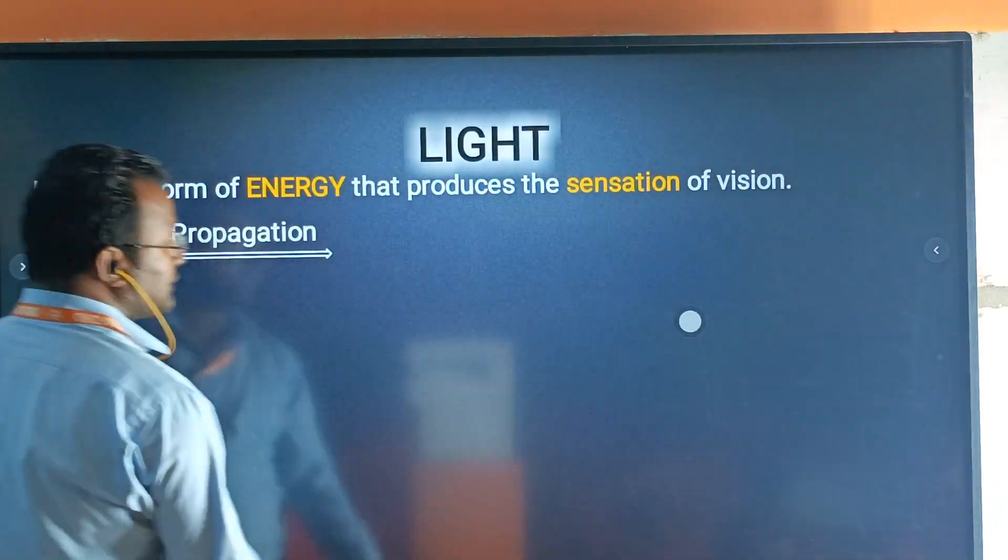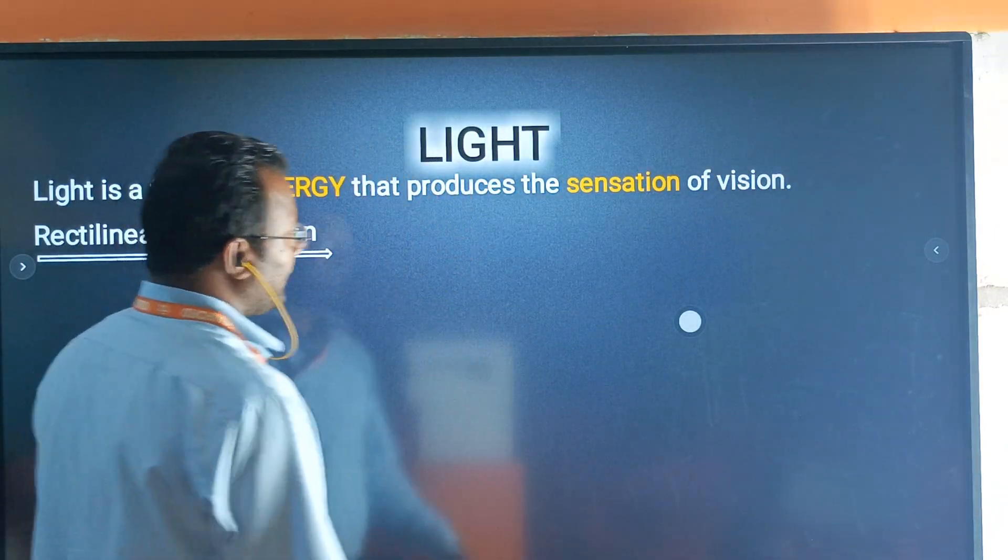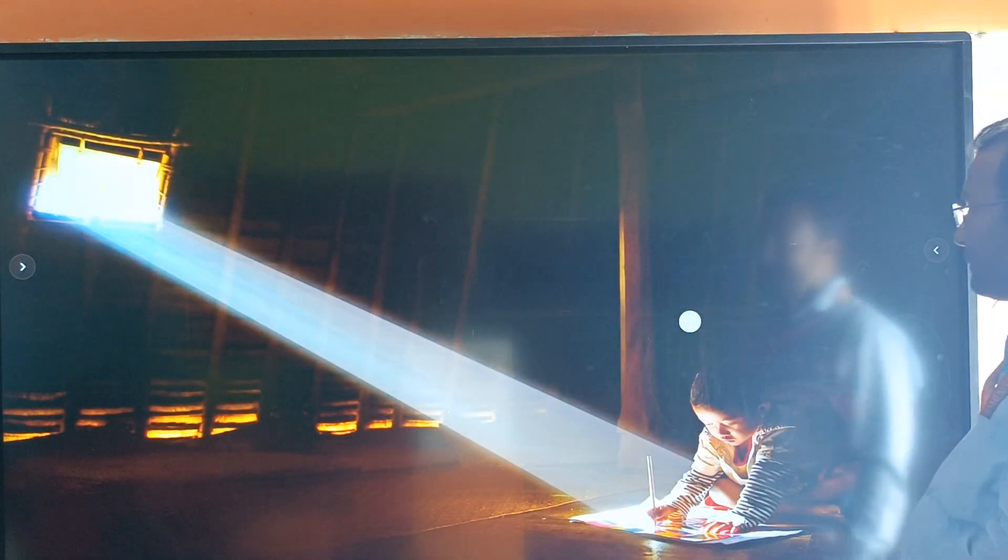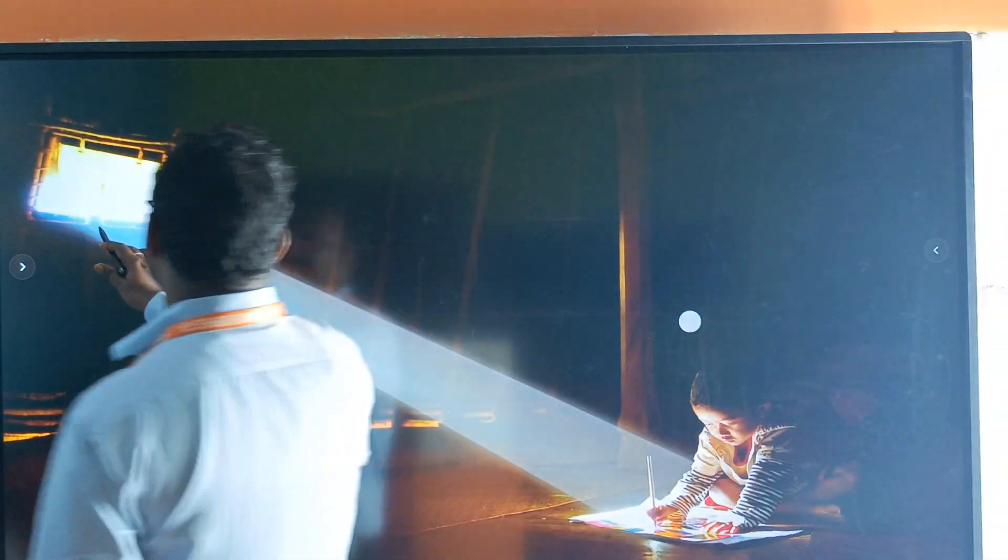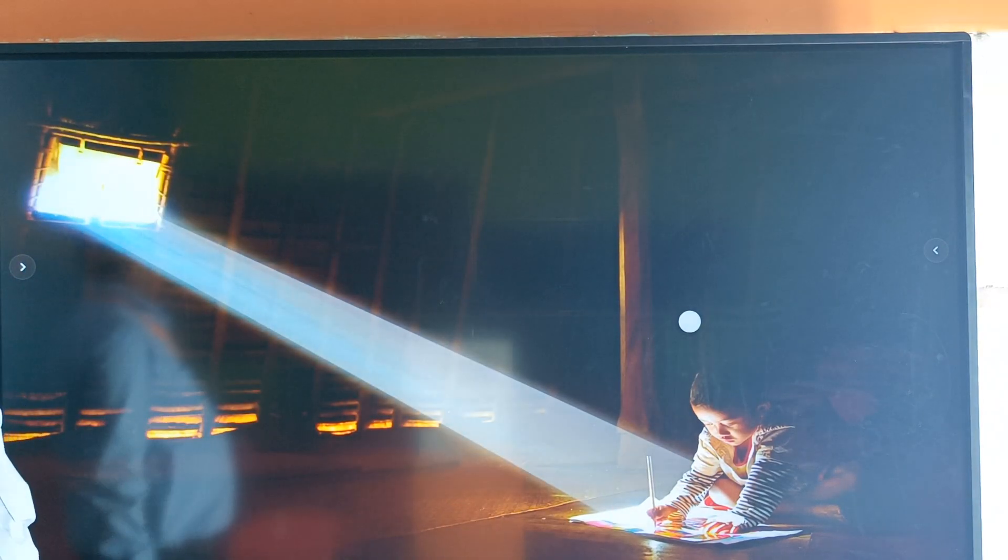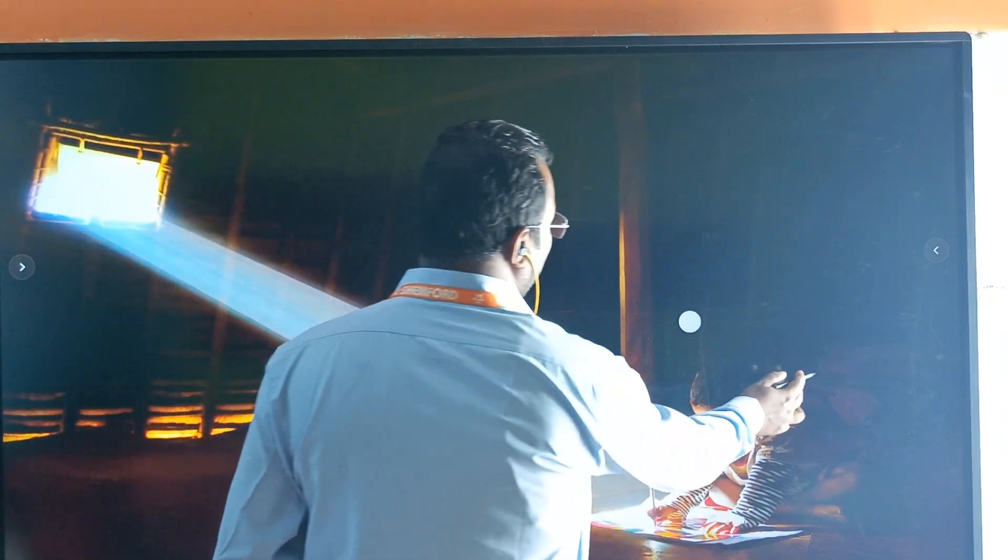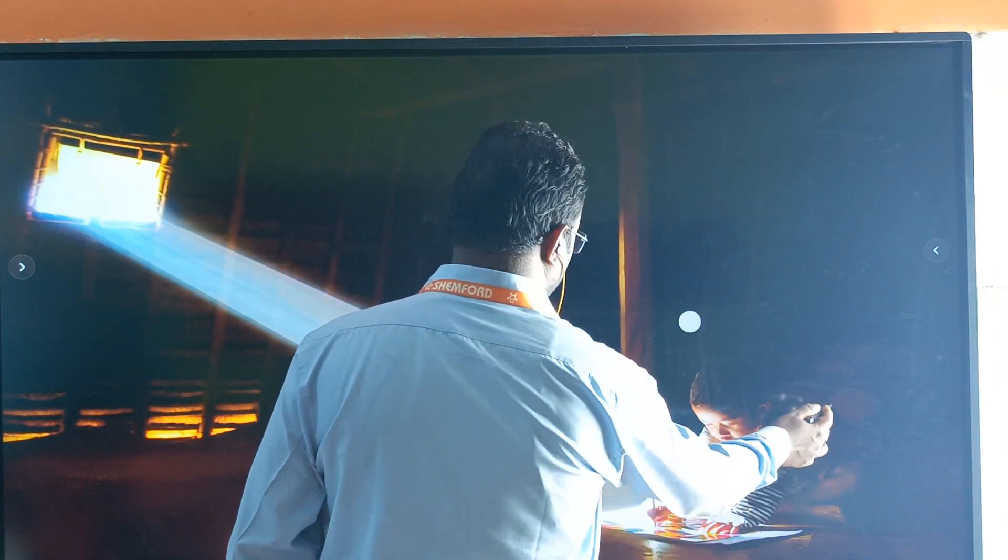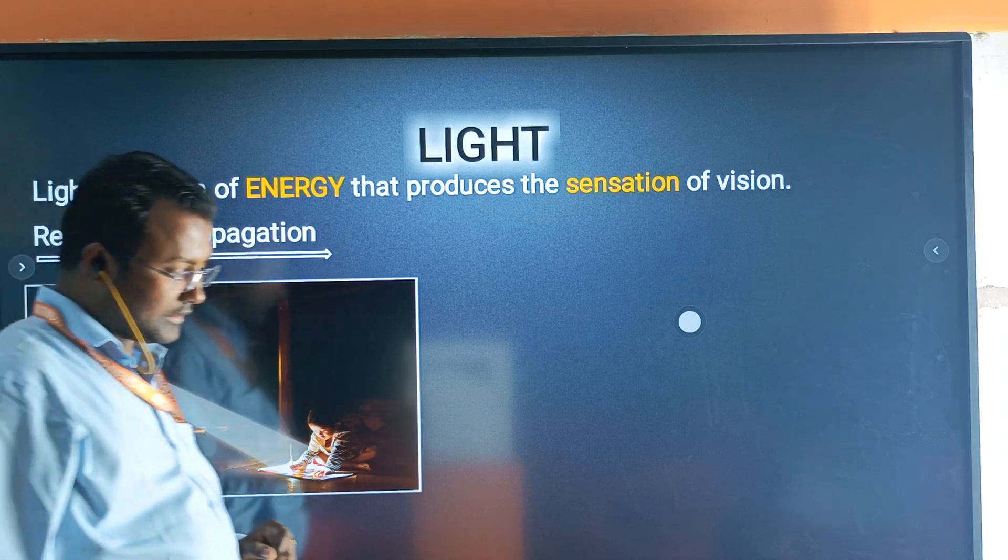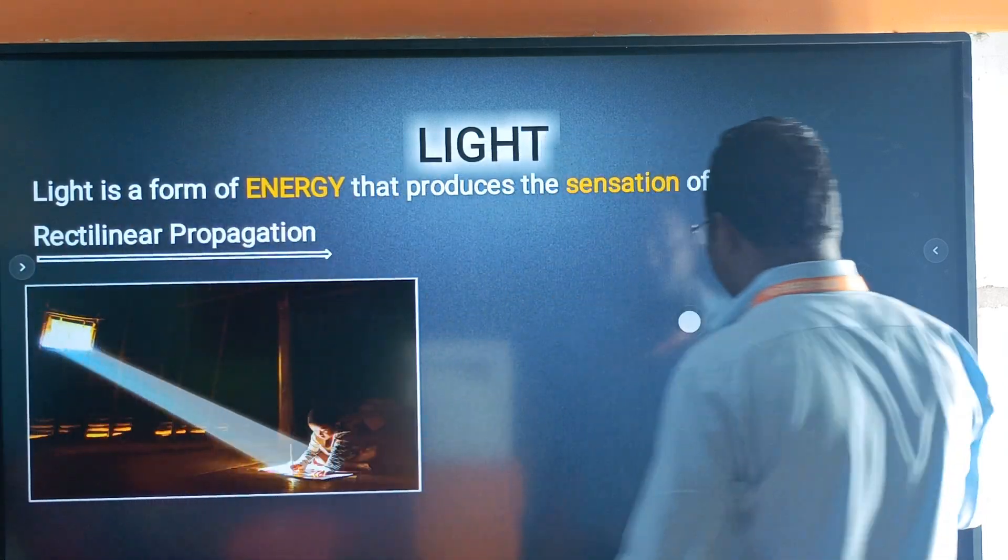Ab kya jaante hain light ke baare mein. Yeh kya jaante hain aap dekhte hain, from window the light is propagated in one direction. That is called rectilinear motion of light. Ab hum ek property ke baare mein baat karte hain.